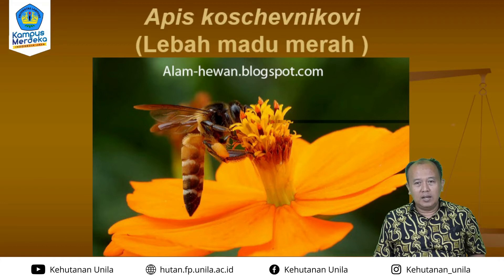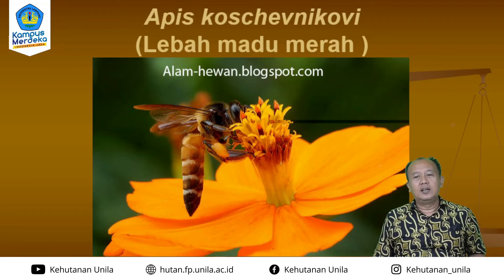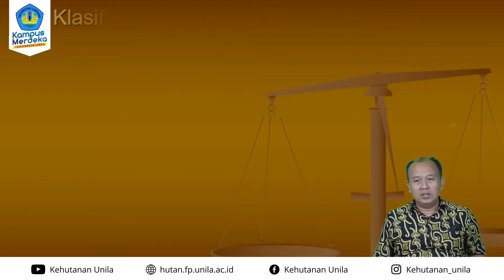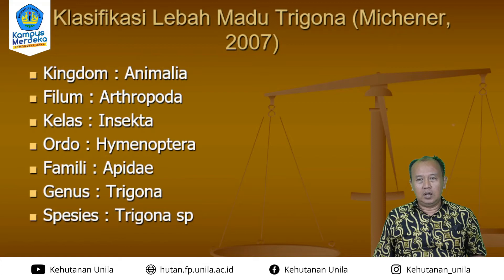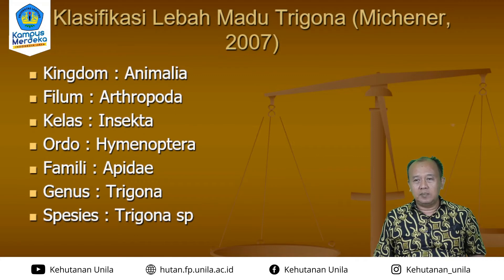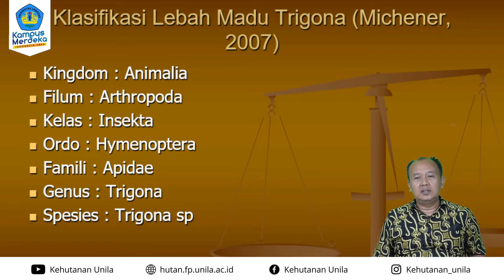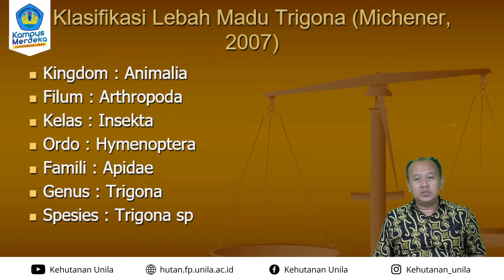Ada juga madu yang rasanya campuran — manis, ada asam, dan lain-lain. Namanya madu Trigona. Kalau tadi madu yang manis dan ukurannya besar, madu Trigona ini ukurannya kecil. Ada orang menyebutnya lulut, ada juga yang menyebut lanceng. Madu ini lebih mahal daripada madu yang manis tadi. Trigona tidak menyengat, sehingga sangat familiar untuk kegiatan wisata madu. Manfaatnya juga lebih banyak — orang Korea, Jepang, dan Arab lebih suka madu Trigona.